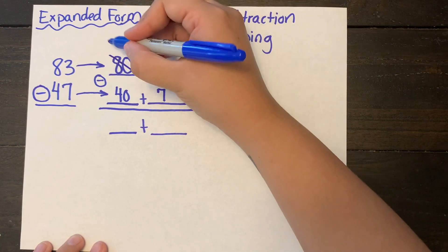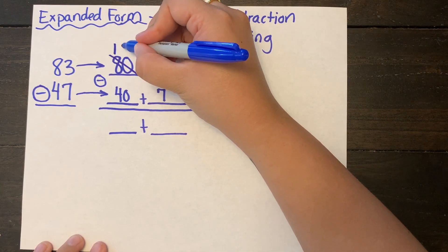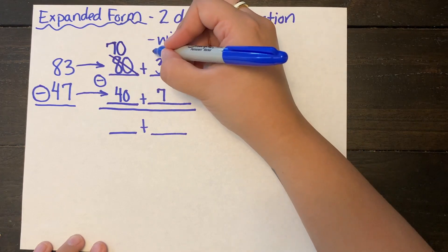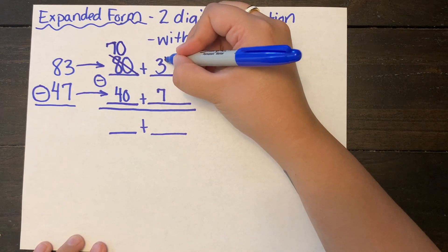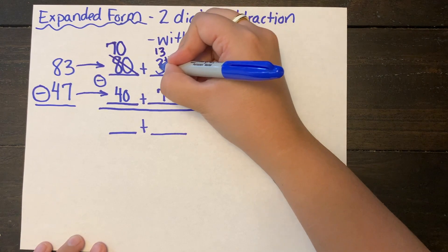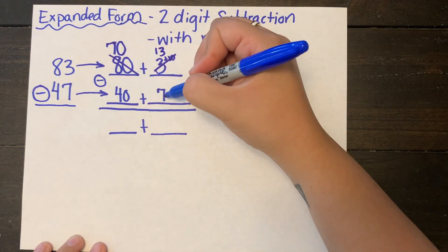So instead of having 80 I'm going to have 70 left in my tens column. I'm going to regroup that 10 over to my ones column. So 3 plus 10 equals 13 and I'm making sure I'm crossing out my numbers so I'm not accidentally adding those numbers as well or subtracting those numbers.